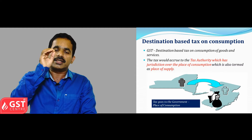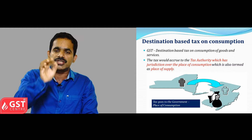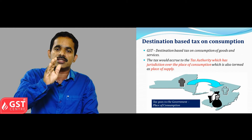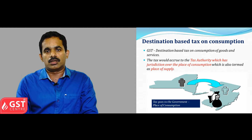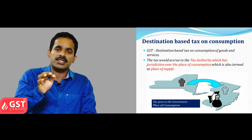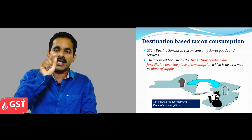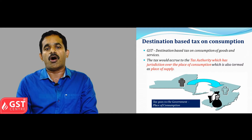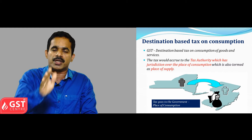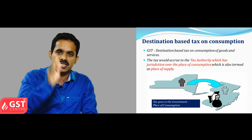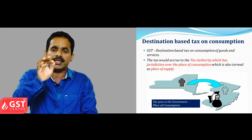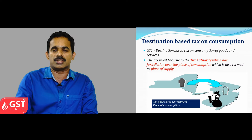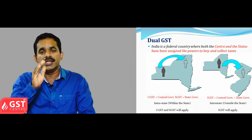GST is a destination-based consumption tax. That is, the revenue from GST will be accruing to the tax authority where the consumer is situated — that is, the place of supply, or where the consumption is taking place. That tax authority will be getting the GST revenue from the GST system.